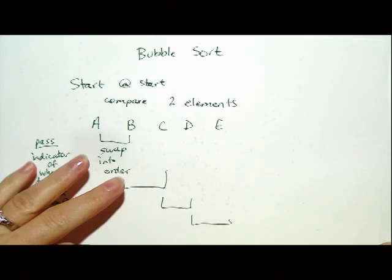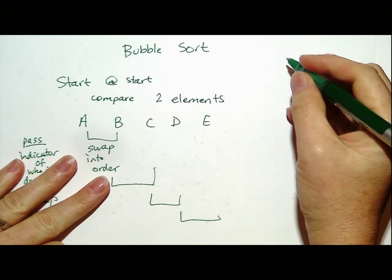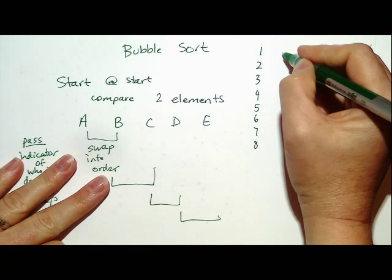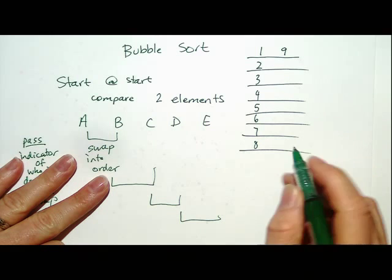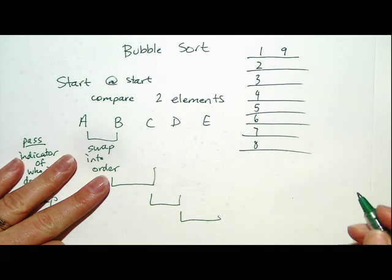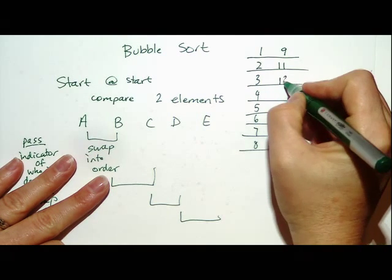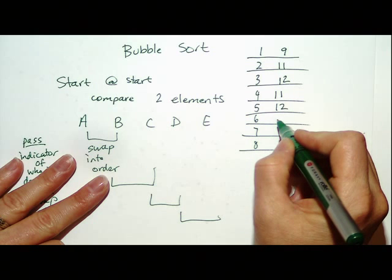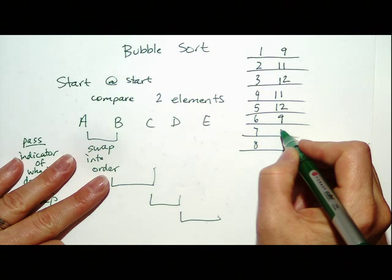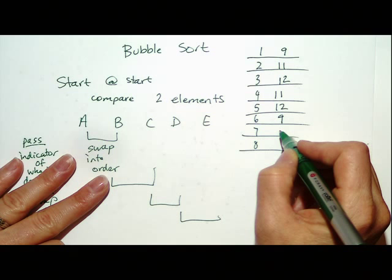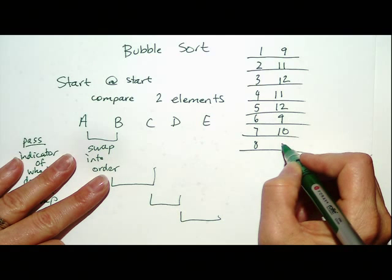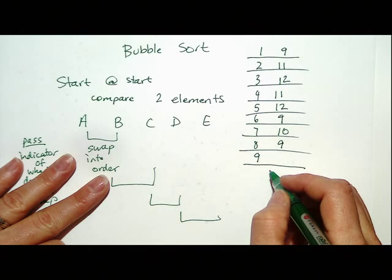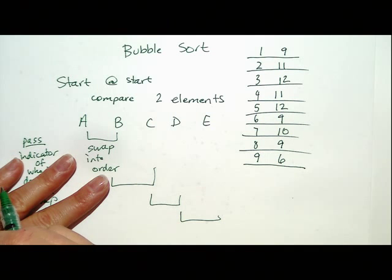So now I want you to tell me how many people are in your row. How many people are in this row? Nine? How many people in the second row? Eleven? Third row? Twelve? Fourth row? Fifth row? How many? Twelve? Six? Nine? Seven? Did you say seven? Ten? Row eight? Row nine? Did I hear six? Is that the back row? Okay.